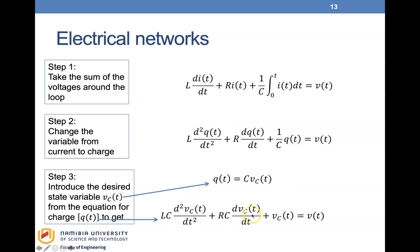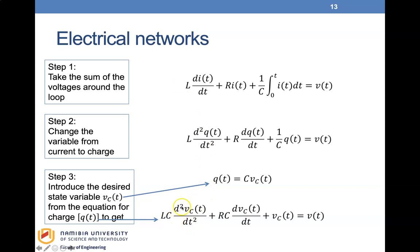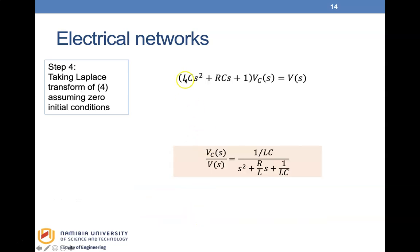By substituting Q = C·Vc(t) into the equation, we arrive at an expression containing Vc(t). Taking the Laplace transform of this equation gives LC·s²·Vc(s) + RC·s·Vc(s) + Vc(s) = V(s), which factors as (LC·s² + RC·s + 1)·Vc(s) = V(s). The transfer function Vc(s)/V(s) equals 1/LC divided by (s² + (R/L)s + 1/LC).